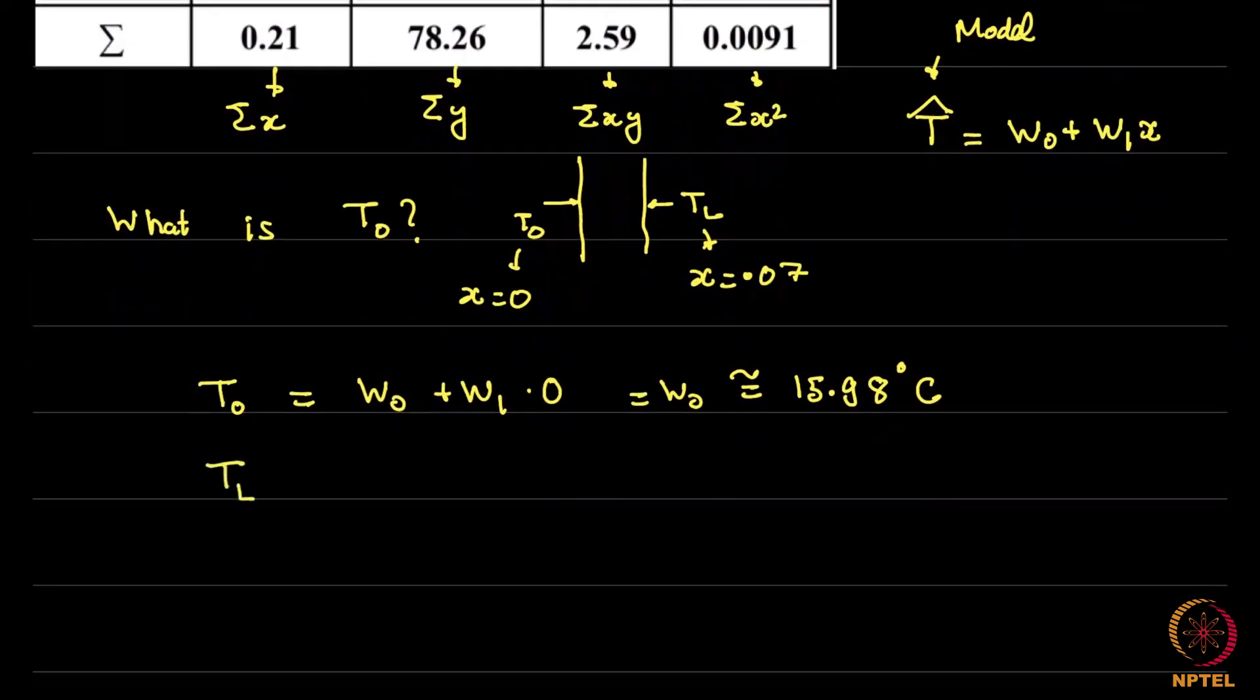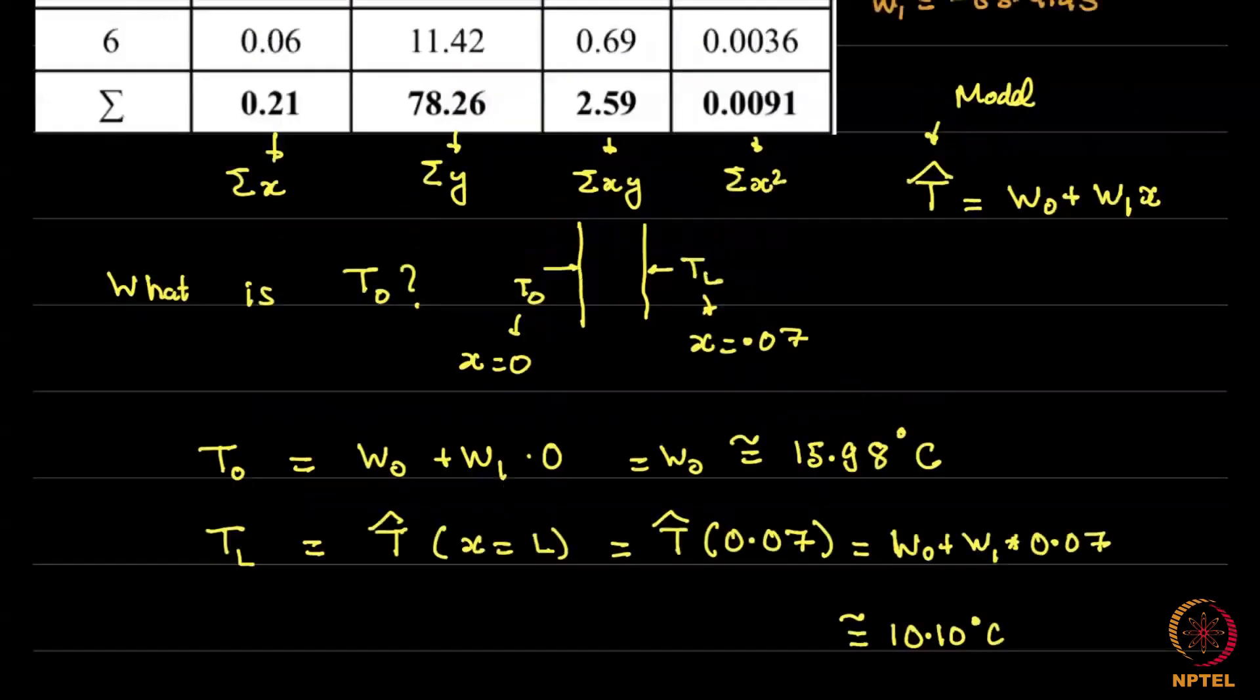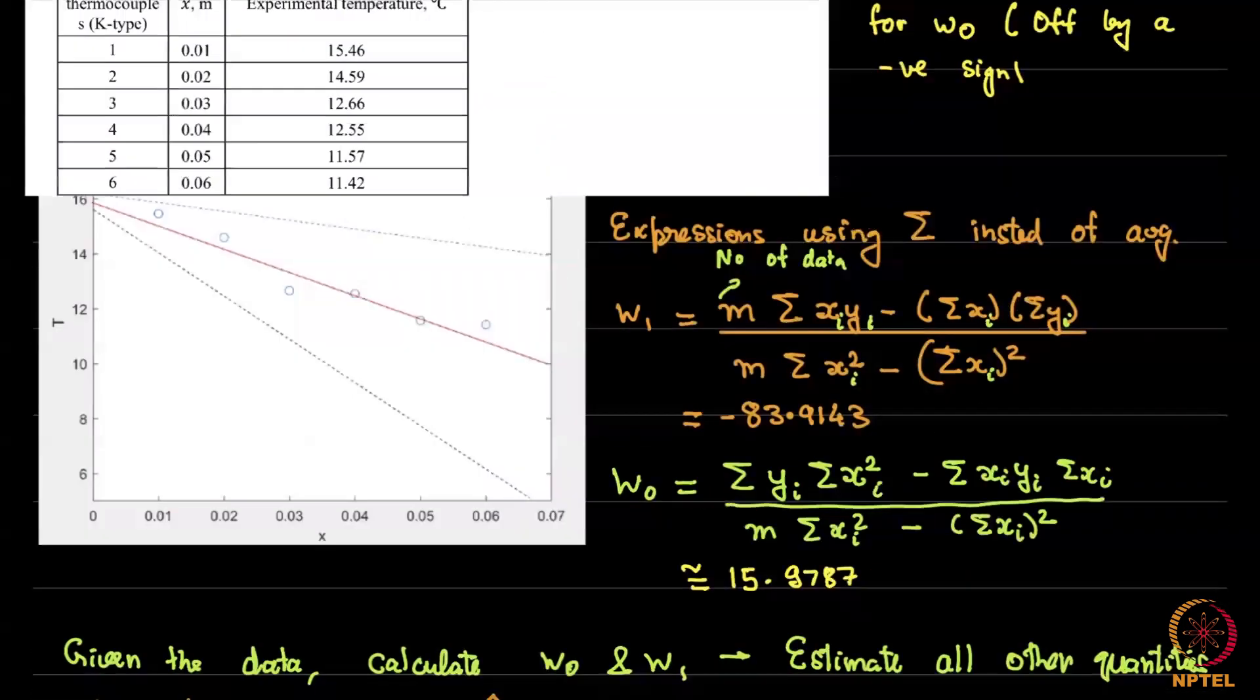The temperature at the right end, TL, can be calculated similarly. This is simply the predicted temperature at x equal to L which is T hat at x equal to 0.07 since the length of the slab is 70 mm. So this then becomes w0 plus w1 multiplied by 0.07. If you calculate this, this comes to 10.10 degree Celsius approximately.